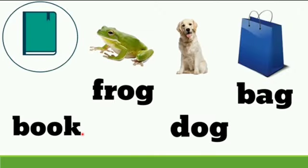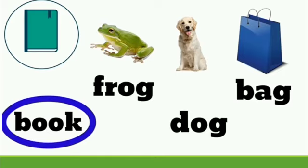Book, Frog, Dog, Bag. See, the ending letter is G for three words: Frog, Dog, and Bag. Only which word is left? Correct! Book. So Book is the odd man out.